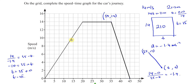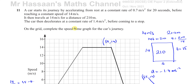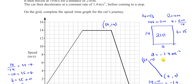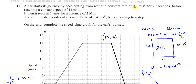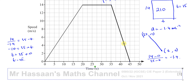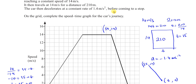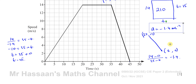Two key things to remember: the area under a speed-time graph gives distance travelled, and the gradient gives acceleration — deceleration is negative acceleration, hence −1.4. An alternative method: the deceleration of 1.4 m/s² is double the acceleration of 0.7 m/s², so it takes half the time to stop. The acceleration phase took 20 seconds, so the deceleration phase takes 10 seconds — from 35 to 45 seconds.